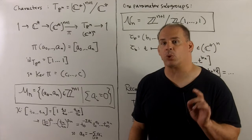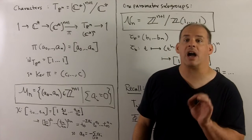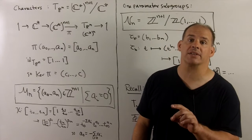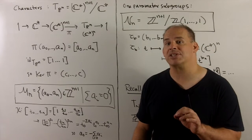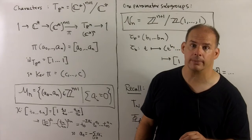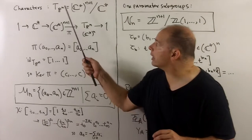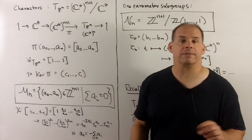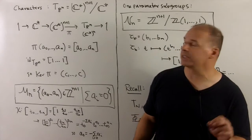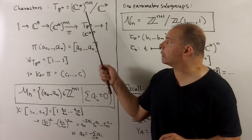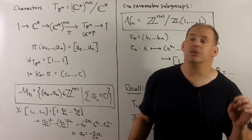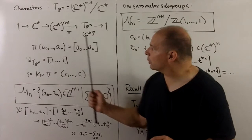Before defining projective toric varieties, we need a concrete understanding of three things: the torus for projective space, its character lattice, and the lattice of one-parameter subgroups. For the torus, let's first understand it as a quotient space — it's the same construction as projective space. Here we have C*^(n+1) and we mod out by a C*. Using an exact sequence: we have C*^(n+1) sitting inside C^(n+1) minus the origin, and we use the quotient map pi to send each point to its class in projective space, landing inside the torus.